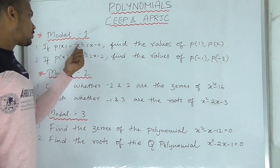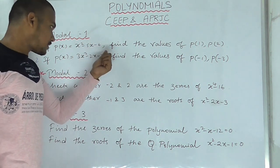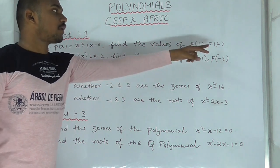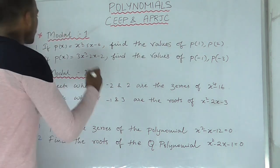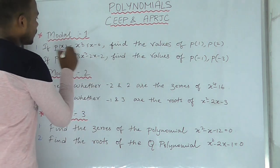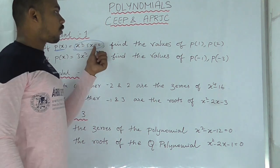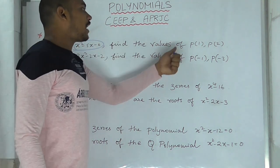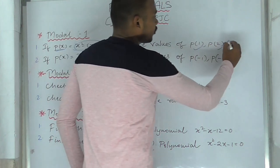If p(x) is equal to x squared minus 5x minus 6, find the value of p(1) and p(2). Now, p(x) — find the values of p(1) and p(2).